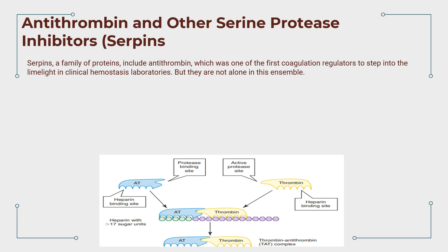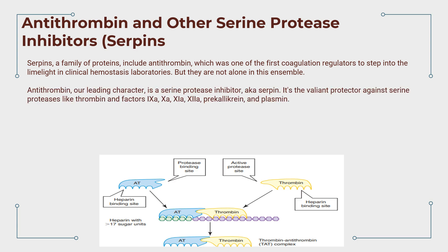Antithrombin is a serine protease inhibitor — a serpin — and the valiant protector against serine proteases like thrombin and factors IXa, Xa, XIa, XIIa, prekallikrein, and plasmin.